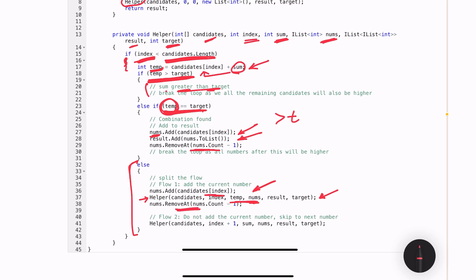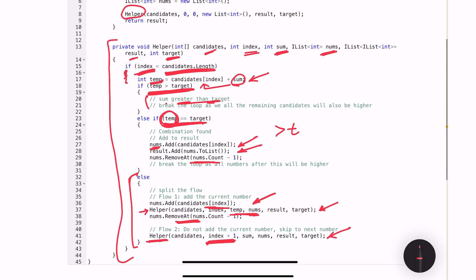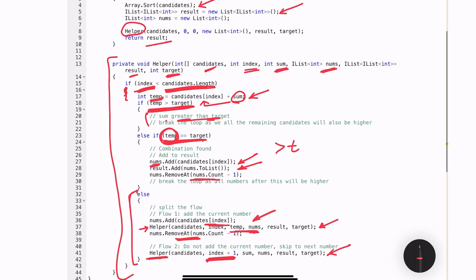And then I will call the helper method, but this time I will not be adding the current number, instead I will be incrementing my index to the next value. Once the helper method execution is complete, I will have all of the arrays in this result variable, and I am returning it on line 9.